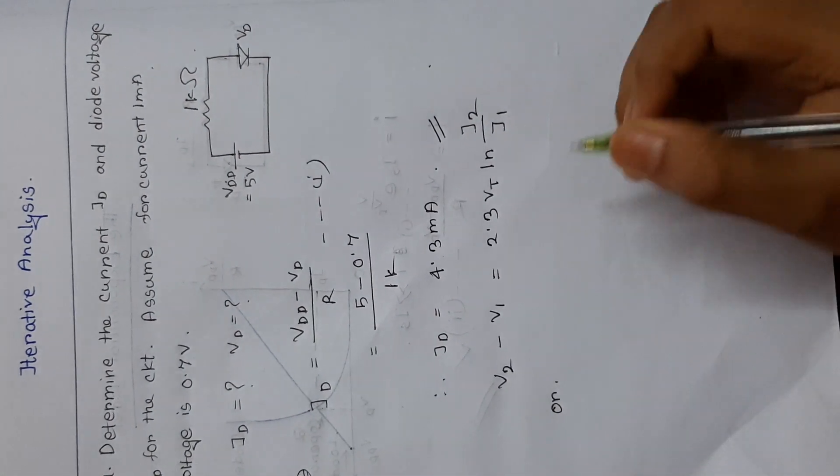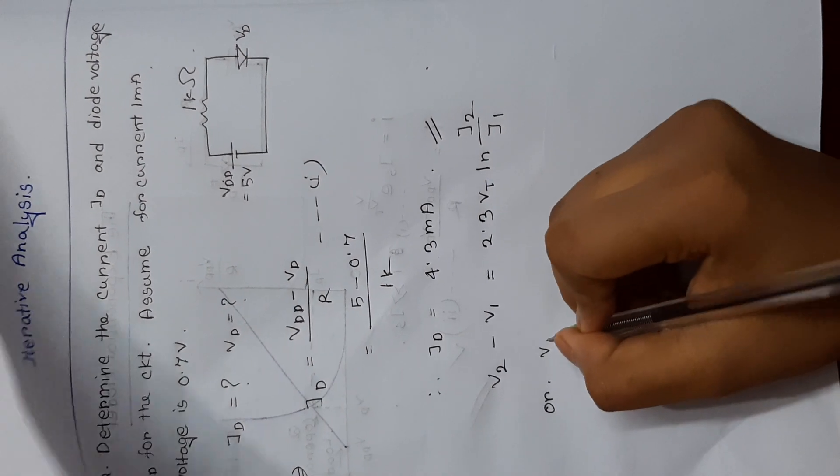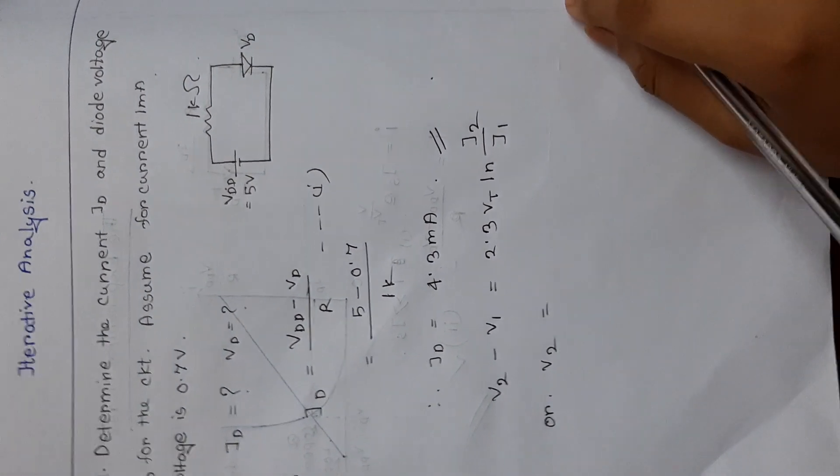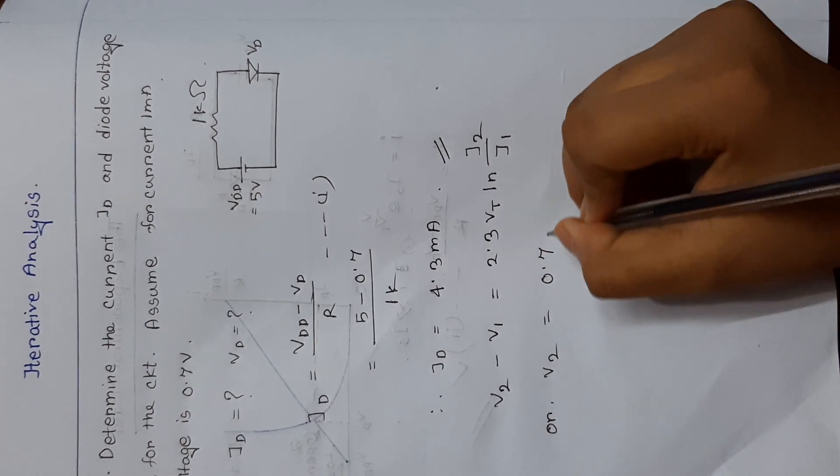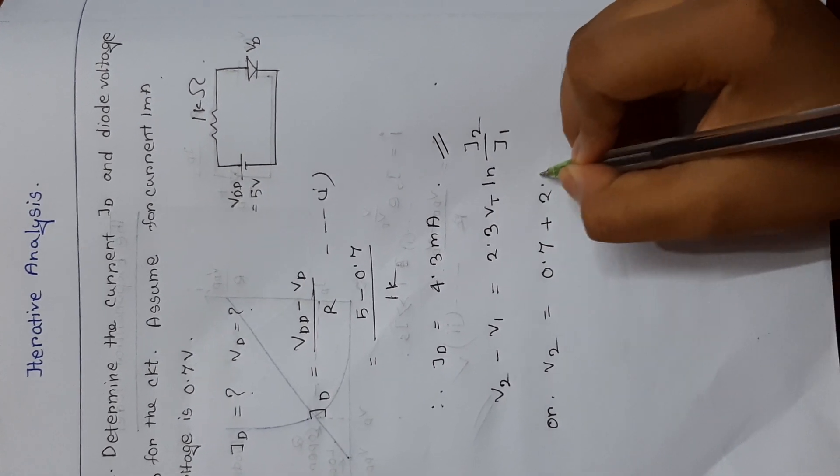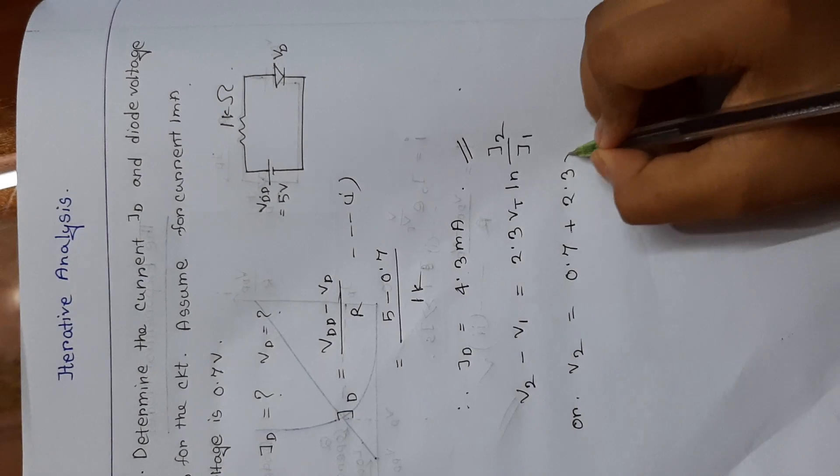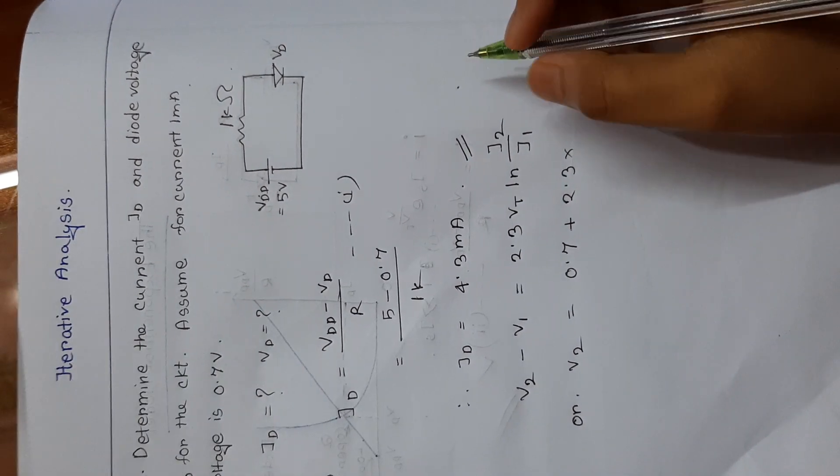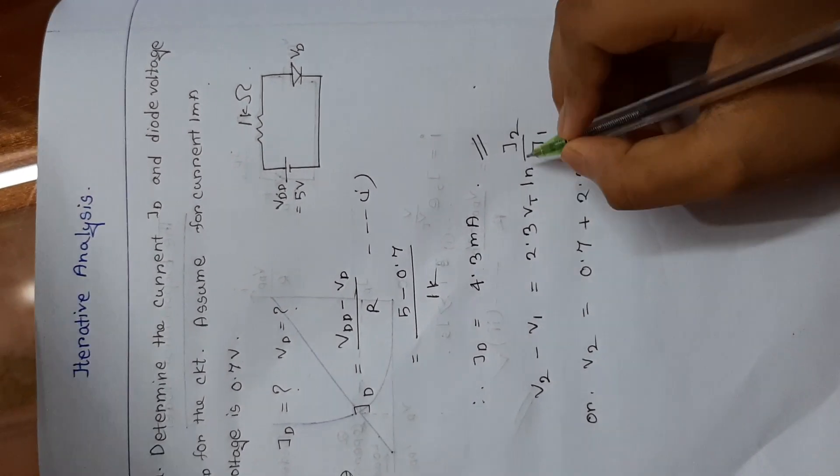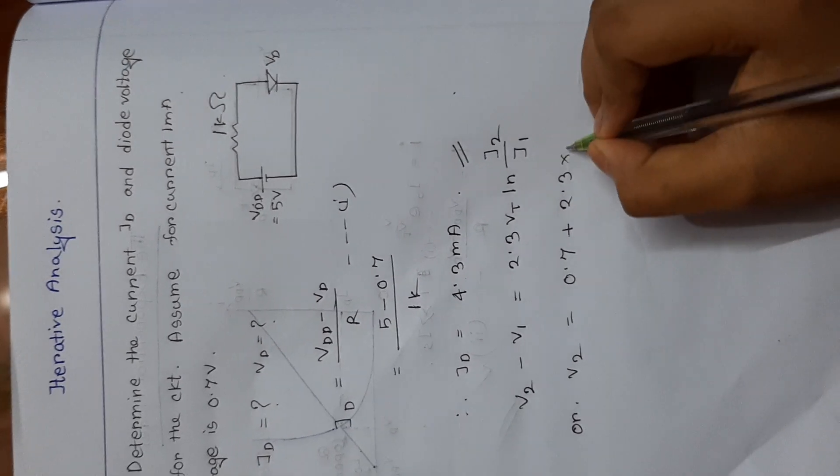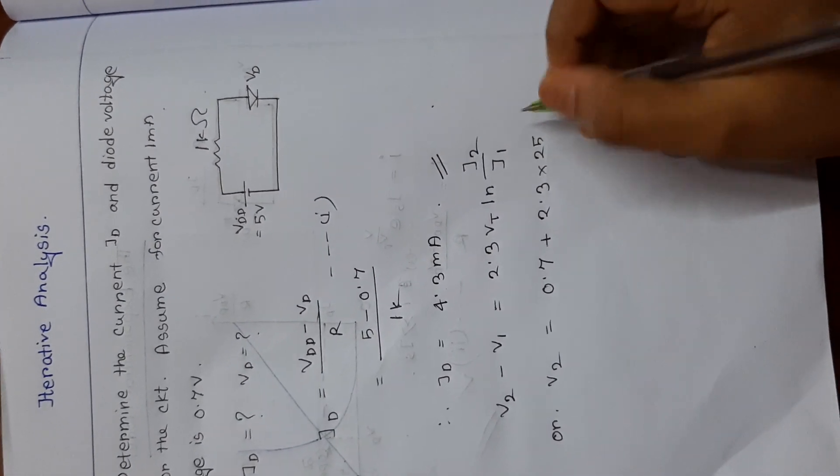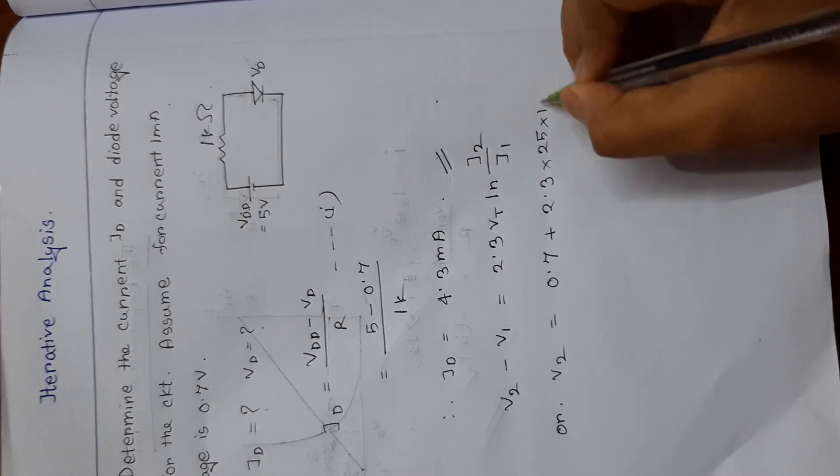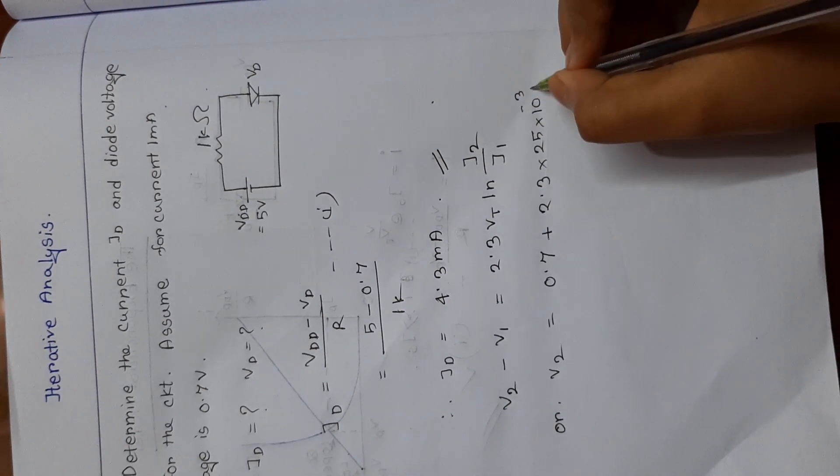So V2 is equal to 0.7 plus 2.3, and in the previous video I said that Vt is the thermal voltage, and we have to take at room temperature 25 millivolt, that is 25 into 10 to the power minus 3 volt.